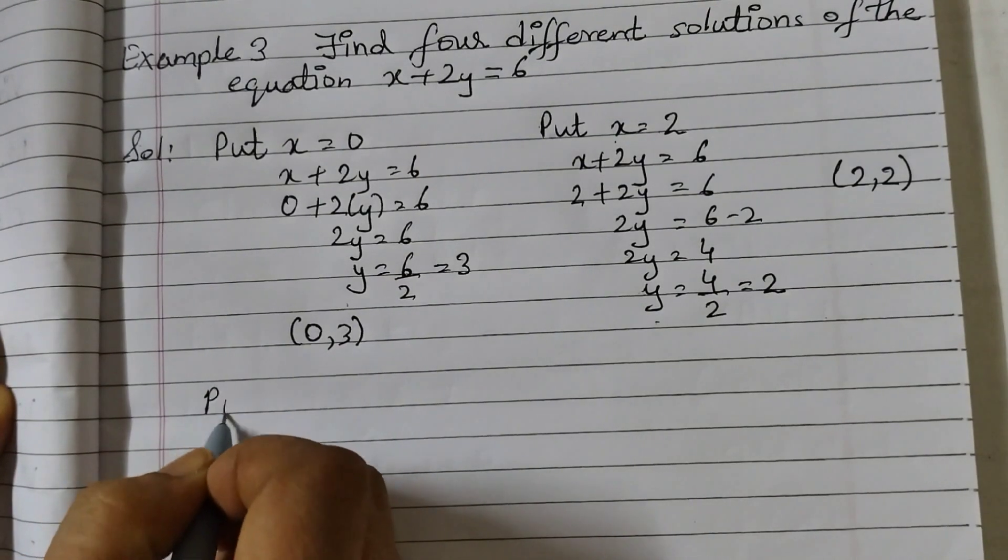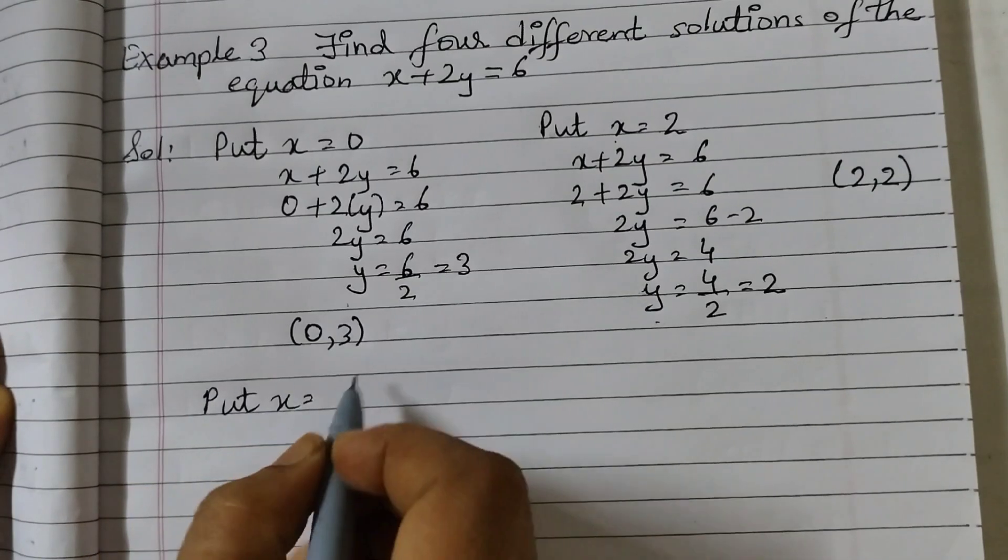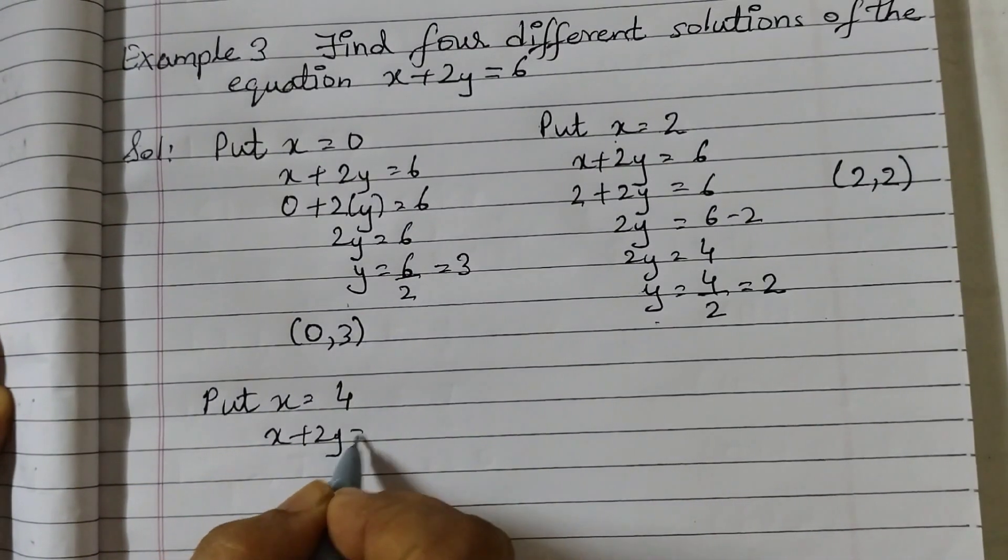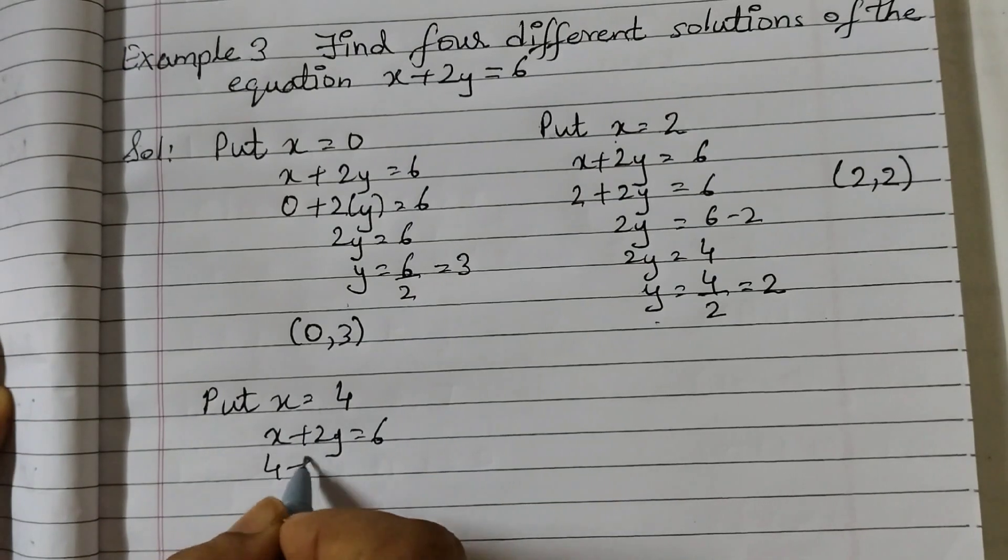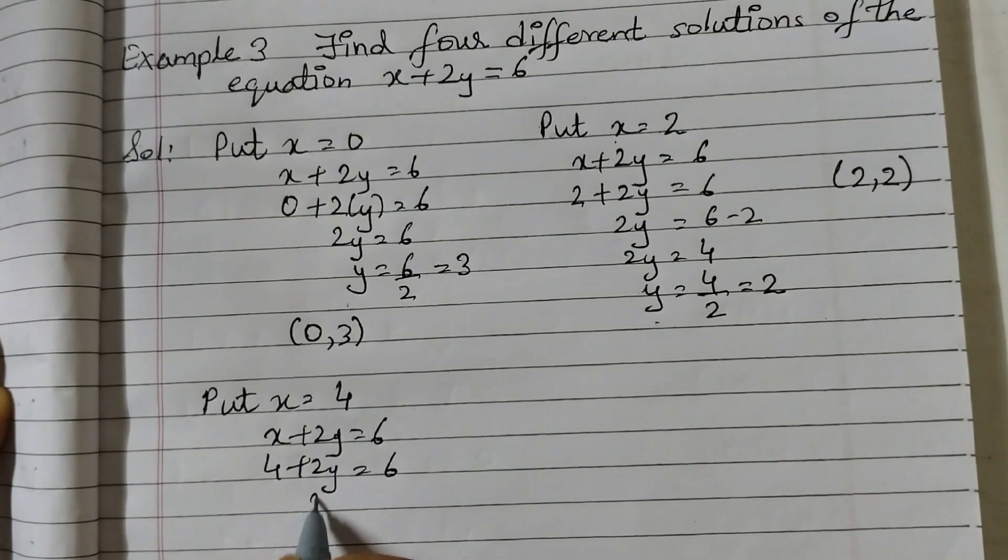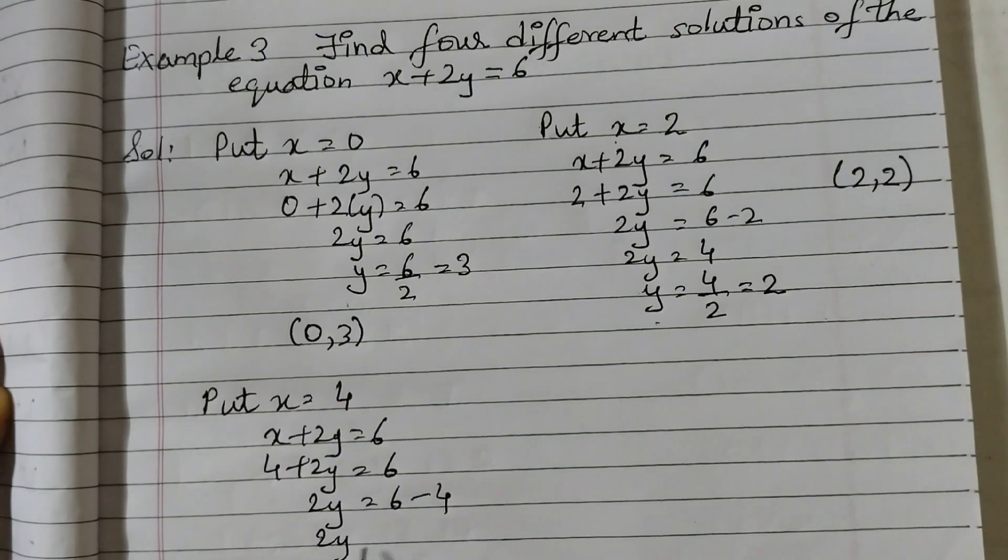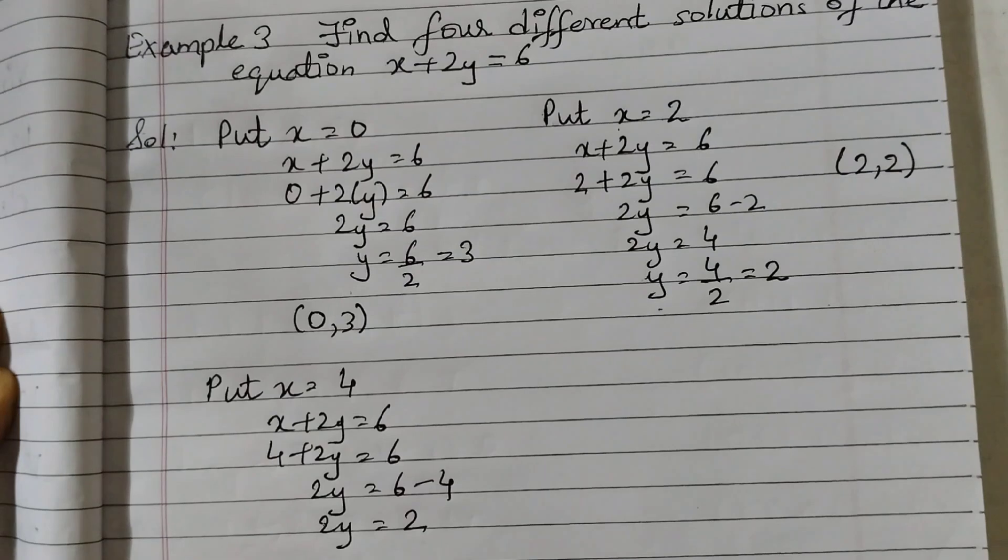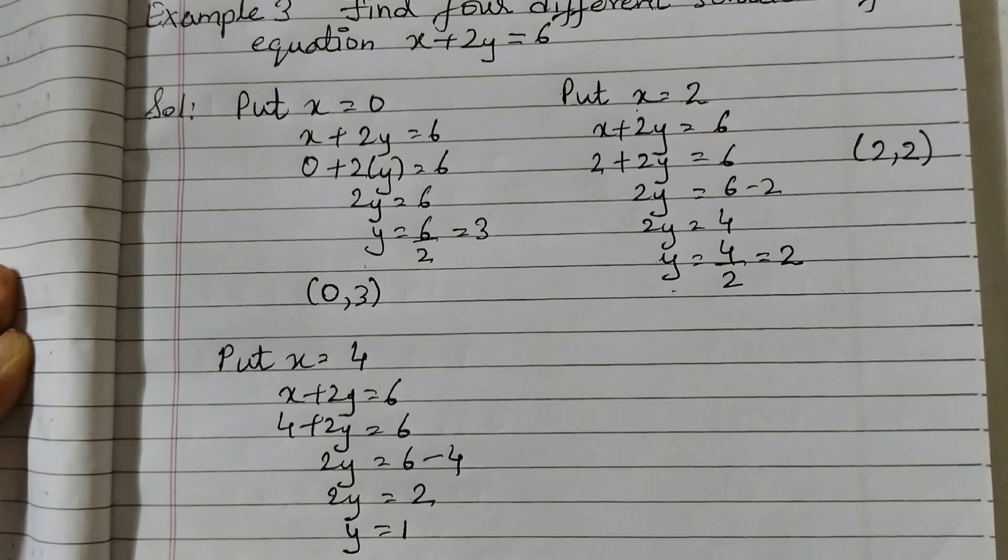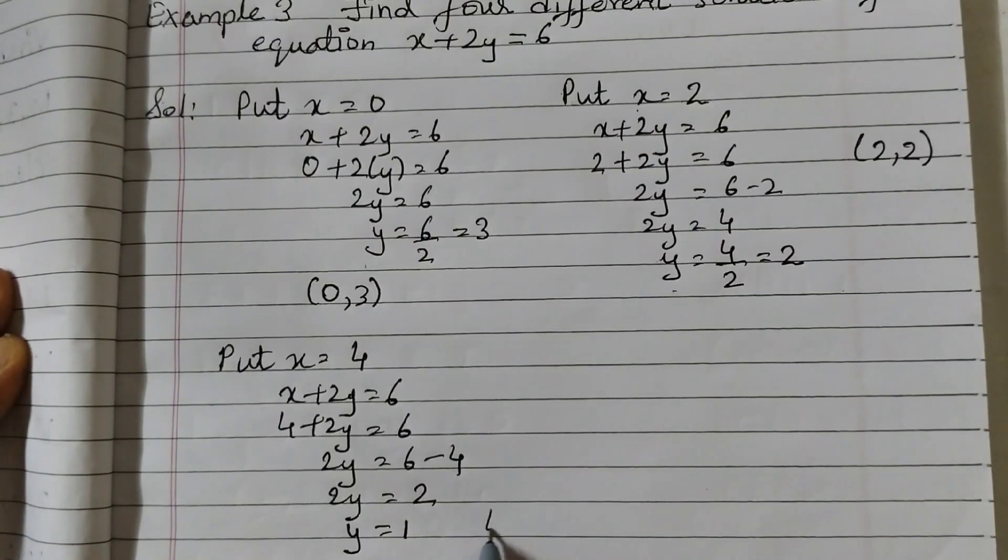Now let's take x as 4. So x plus 2y is equal to 6, 4 plus 2y is equal to 6. Take 4 to the other side, 2y is equal to 6 minus 4, 2y is equal to 2 or we can say y is equal to 2 divided by 2 will be 1. So here in this case, the solution is 4 comma 1.